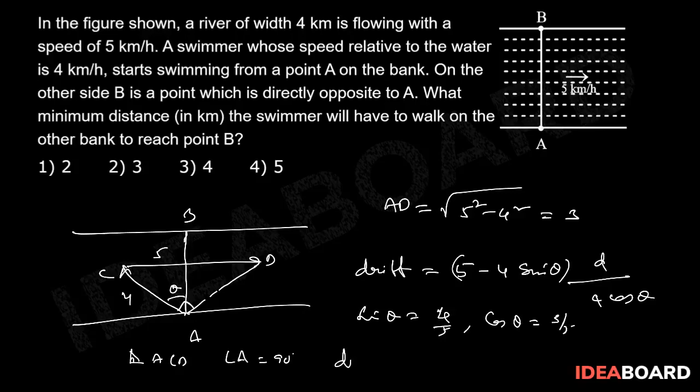Therefore, drift equal to 5 minus 4 into 4 by 5 into 4 by 4 into 3 by 5. Solving we get 3 km. So, 2 is the correct option.